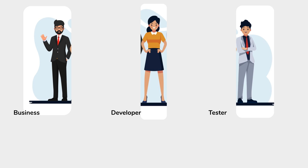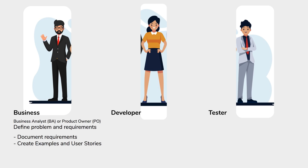When we talk about the business team, this person is a business analyst or a product owner, and they define the problem and the requirements. They talk with the business owner or the stakeholders of the application, gather requirements — what changes they need, what new features they need — and then document these requirements, create examples and user stories that can be discussed with the rest of the team.